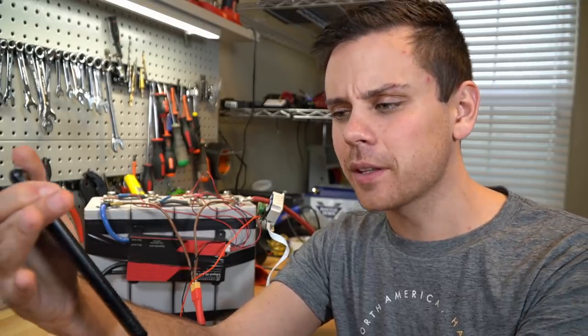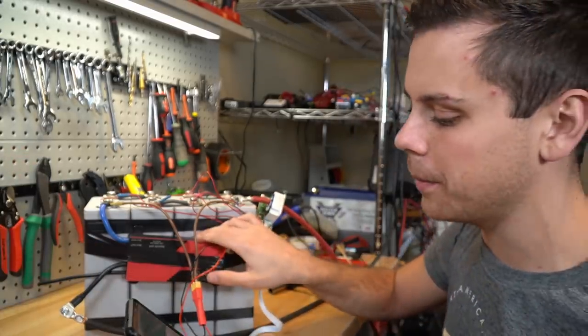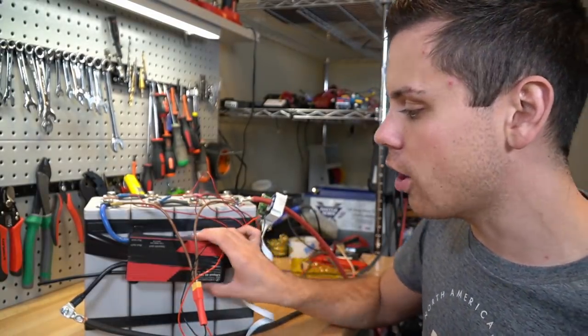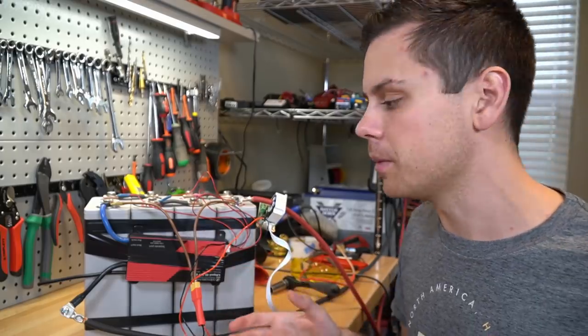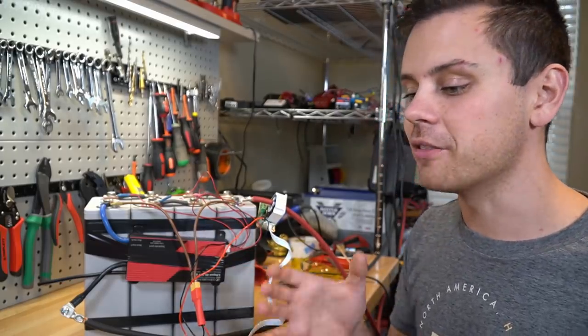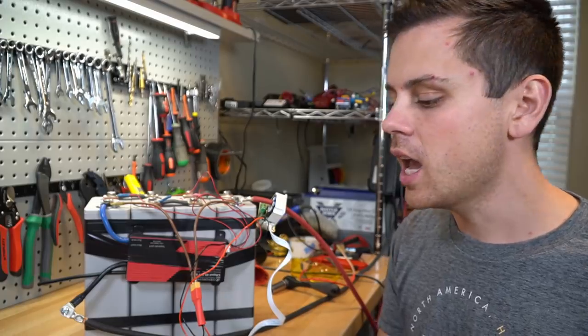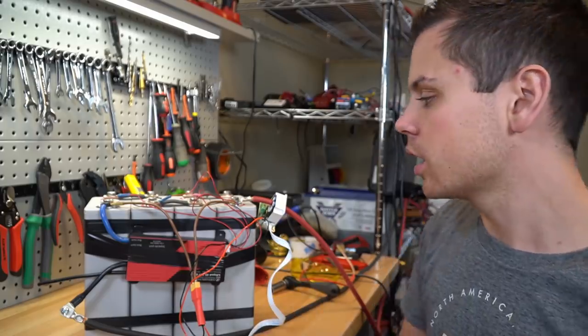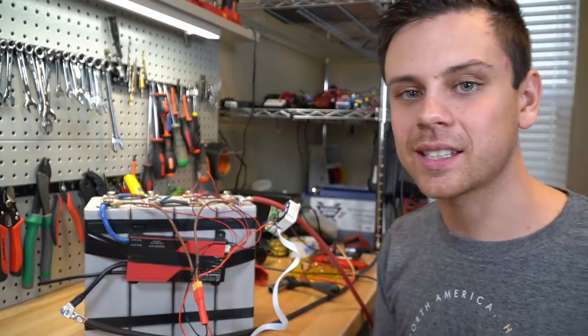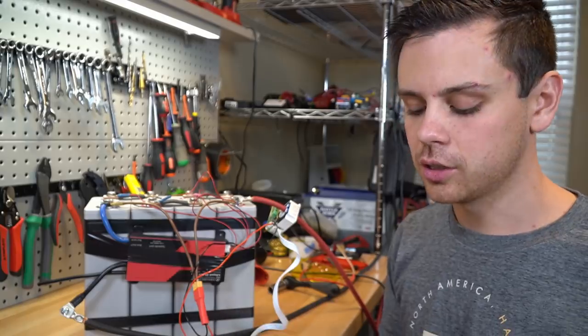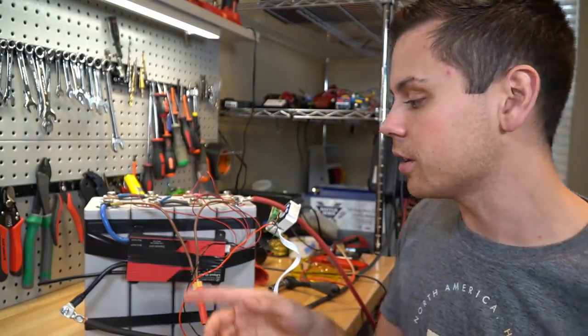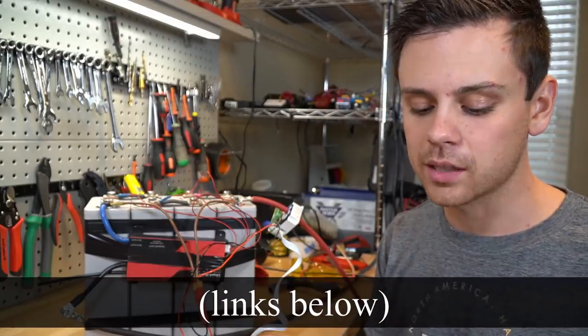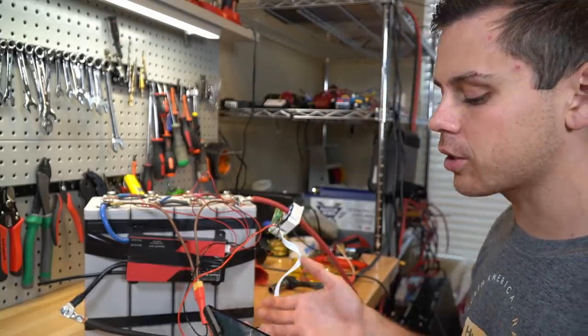Now let's talk about the cons. First of all, this Daly BMS does not have low temperature cutoff. As I've talked about in many videos, you need to create your own low temperature cutoff mechanism. Typically the cheapest and easiest way is by a Victron solar charge controller and by a battery sense module. That will allow the solar charge controller to know the temperature of your battery and it will disconnect if they are too cold. I also cover that in the website and I have schematics on how to use these BMSs, so please check those out if you are completely lost as to what that means.